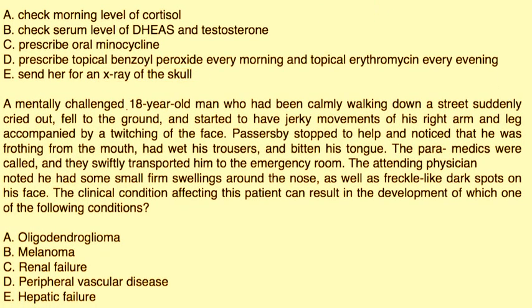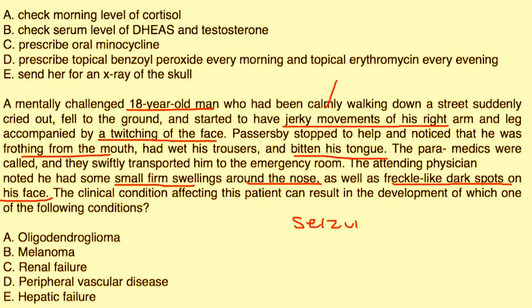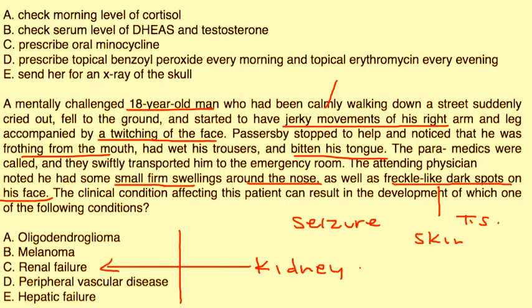Finally, a mentally challenged 18-year-old man was calmly walking down the street when he suddenly cried out, fell to the ground, and started having jerky movements of his right arm and leg, accompanied by twitching in the face. He was frothing from the mouth, had wet trousers, and had bitten his tongue. The attending physician noticed small, firm swellings around the face, as well as freckle-like dark spots. The jerky movements indicate a seizure, and the facial findings suggest tuberous sclerosis-associated skin abnormalities. The question asks what other condition he can have — tuberous sclerosis can affect the kidney, resulting in renal failure. The answer is C.